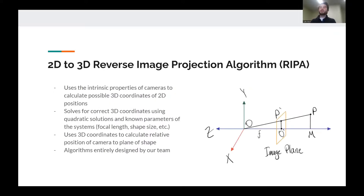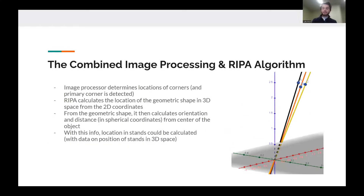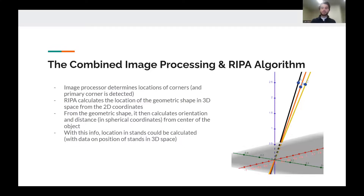Here's a little bit more about our algorithm. We made a proof of concept algorithm which uses the positions of coordinates in 2D photos and calculates the 3D positions using complex algorithms and geometry. Combined, we have image processing which finds the corners, and then our REPA algorithm takes these corners and determines the 3D position of the camera relative to the center of the field.